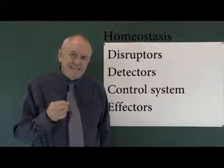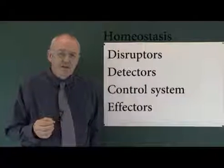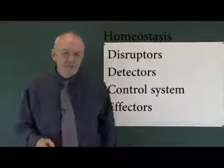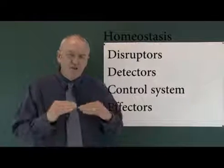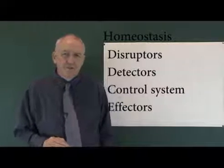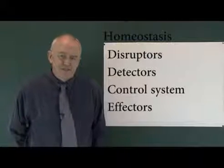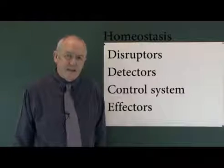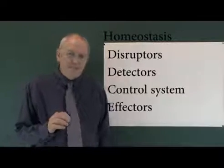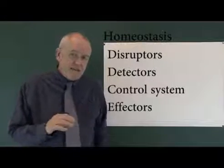Or if you don't drink for a period of time, you're going to get a little bit thirsty and dehydrated. Or if you drink a lot, the tendency would be to become fluid overloaded — too much fluid in the body. These things can disrupt the balance. In the body, there are detectors that detect the disruption, and then there's some sort of control system with effectors that bring it back into a homeostatic range. So we can think about disruptors, detectors, control systems, and effector systems.